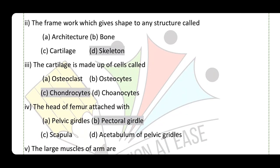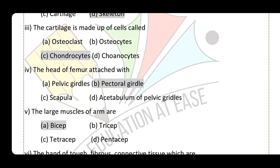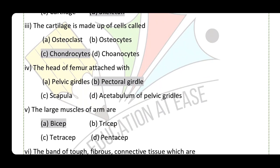The framework which gives shape to any structure is called skeleton. Cartilage is made up of cells called chondrocytes.